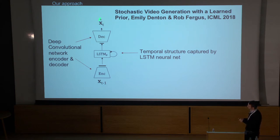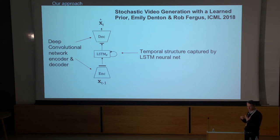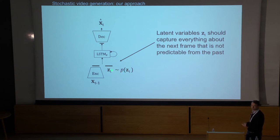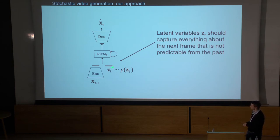If you're just trying to predict the future from previous frames, that's fine. But the difficulty is we need to predict not just a single outcome but a range of plausible outcomes. So we concatenate in an extra variable drawn from some prior distribution. The left-hand side is a deterministic pathway, and the unpredictable part of the future comes in by drawing this set of latent variables Z from this prior distribution.